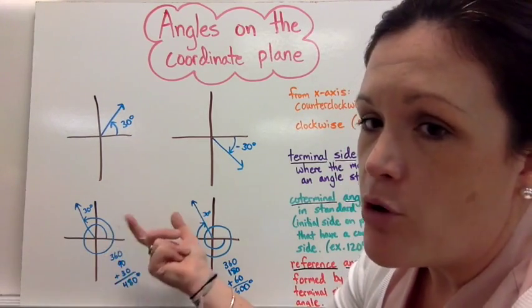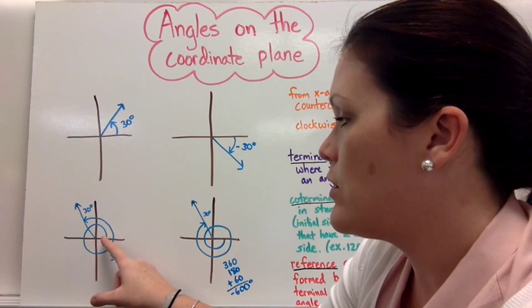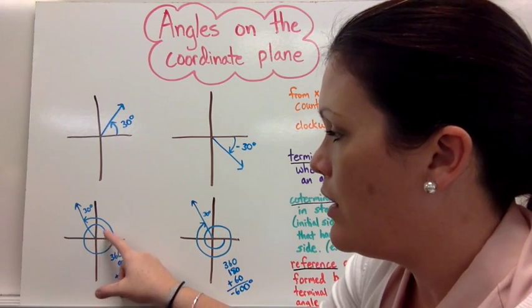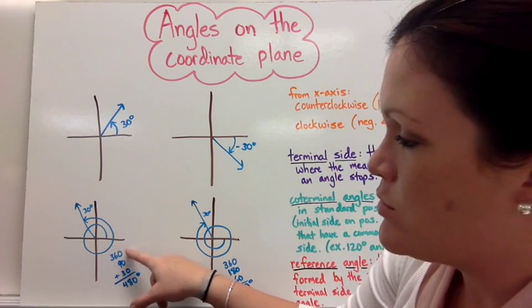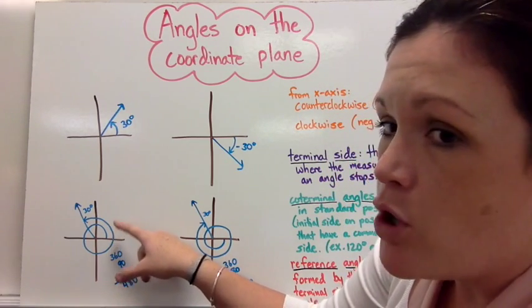You can just add them all together. If you start here, like I did with my marker, and I went up so it's positive, but I go all the way around a whole time right there, so that's 360, but then it kept going.